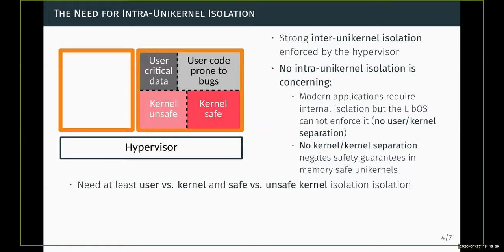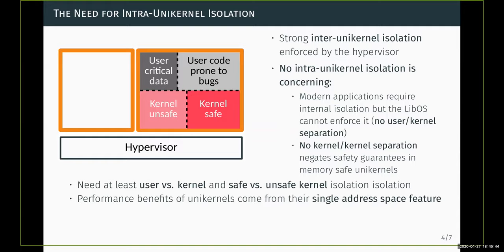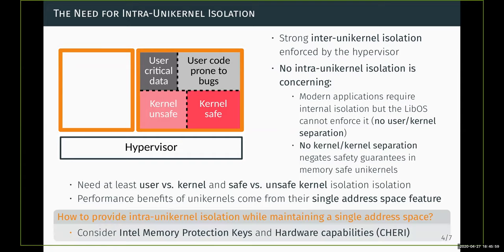We need at least these two types of separation inside the unikernel instance. We observe that the single address space property brings a lot of benefits, so we would like to keep this feature while bringing more isolation inside unikernels.